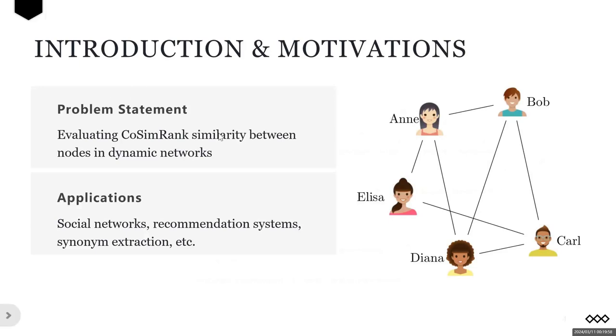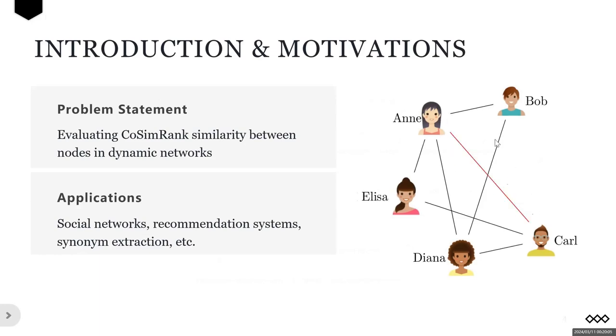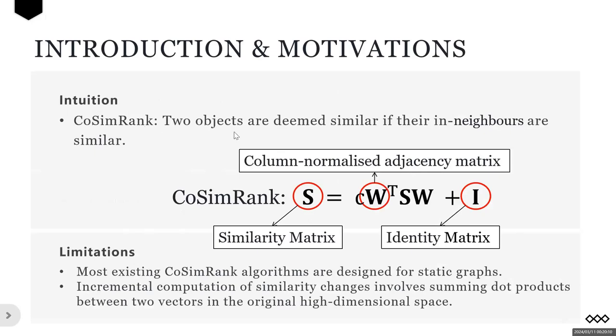Similar search based on graph technology is used in many applications such as social community detection. In this paper, we consider efficient evaluation of CoSimRank similarity on evolving graphs. CoSimRank is a PageRank-like similarity ranking algorithm based on the philosophy that two objects are deemed similar if their neighbors are similar.